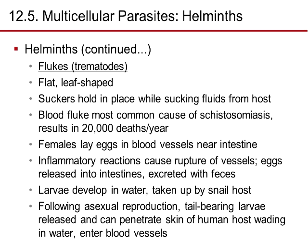Flukes, or trematodes, are flat and leaf-shaped with suckers that hold them in place while they extract fluids from the host. Blood flukes are the most common cause of schistosomiasis and result in 20,000 deaths a year. Females lay eggs in blood vessels of the intestine; inflammatory reaction causes rupture of the blood vessels. Eggs are released into the intestine and excreted with feces. Larvae develop in water, are taken up by a snail host, and after reproduction in the snail, tail-bearing larvae are released and can penetrate the skin of humans wading in water, entering a blood vessel.